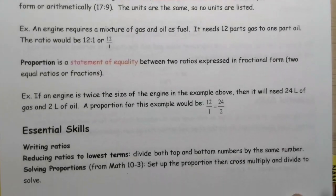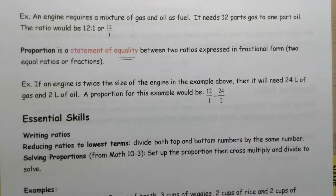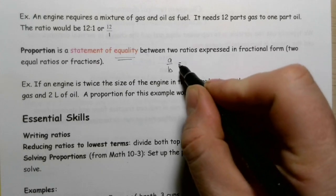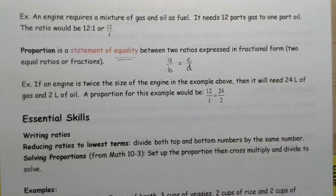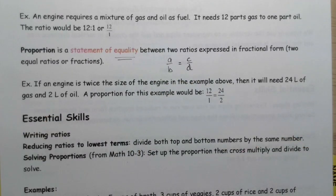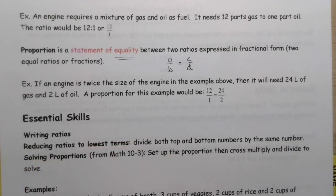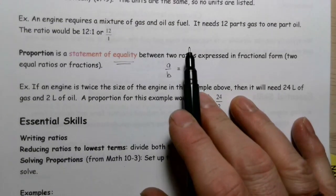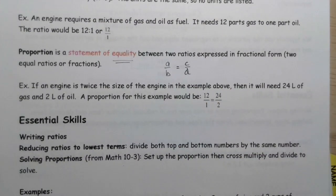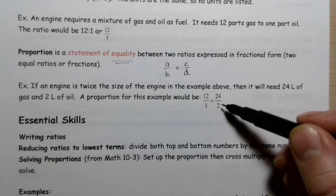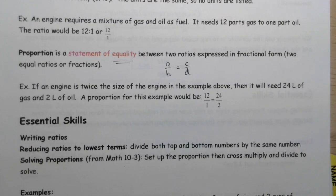From there, we move on to a proportion. The proportion is a statement of equality between two ratios expressed in fractional form. So what we do here is we take A over B and set that equal to C over D. We're going to have two fractions equal to one another. It's really important you get this - it's fraction equal to fraction. If an engine is twice the size of the engine in the example above, then it will take 24 liters of gas and 2 liters of oil. So the proportion here, 12 to 1, would be the same as 24 to 2. Those are representations of the same relationship, just one is larger than the other.